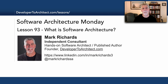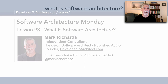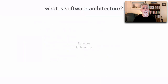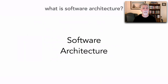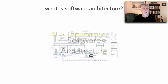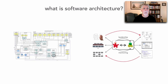When I was thinking about what to do for Lesson 93, it dawned on me that I've gone through 93 lessons and I haven't really defined software architecture. It's really hard to define software architecture. When we try to tackle that definition, it really bifurcates into two main parts: architecture the structure, and architecture the process.